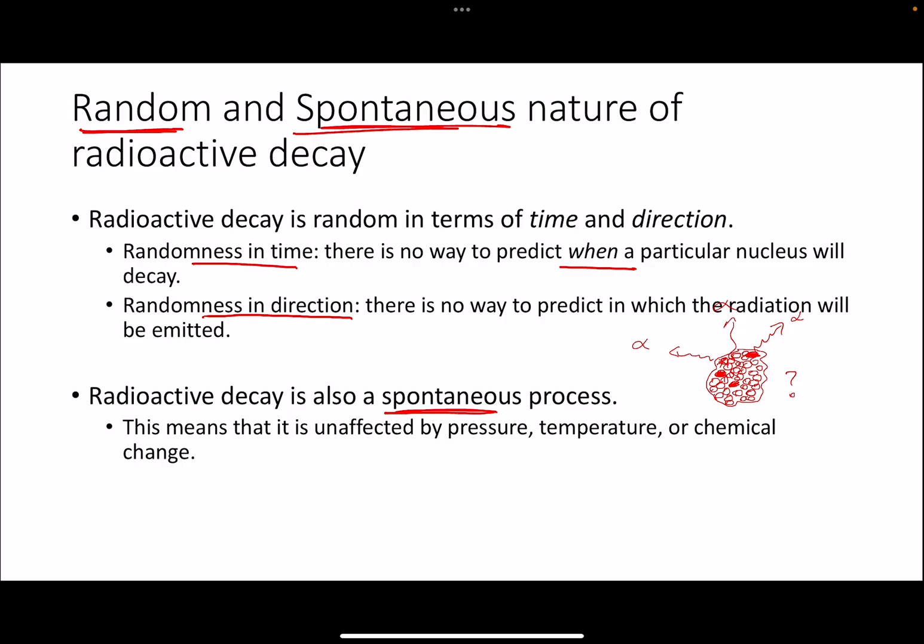You can't do anything to change anything about the process. The process goes on on its own and it cannot be controlled by physical conditions such as temperature or pressure, or you can't even make any chemical changes to change the process. The process will happen the way it wants to happen. We can do nothing about it, and we can't change or stop or start the process. So that is what it means for radioactivity to be spontaneous.